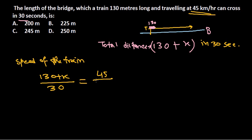One important thing: the speed is in kilometers per hour, but here we're working in meters per second. So we need to convert. To convert kilometers per hour to meters per second, multiply by 5/18. To convert meters per second back to kilometers per hour, multiply by 18/5 — the opposite.